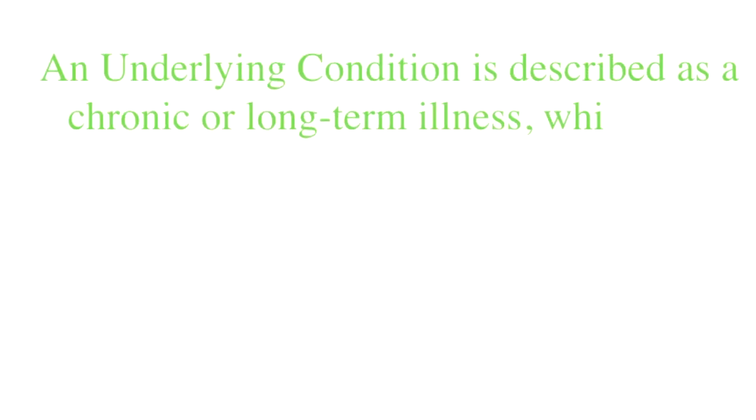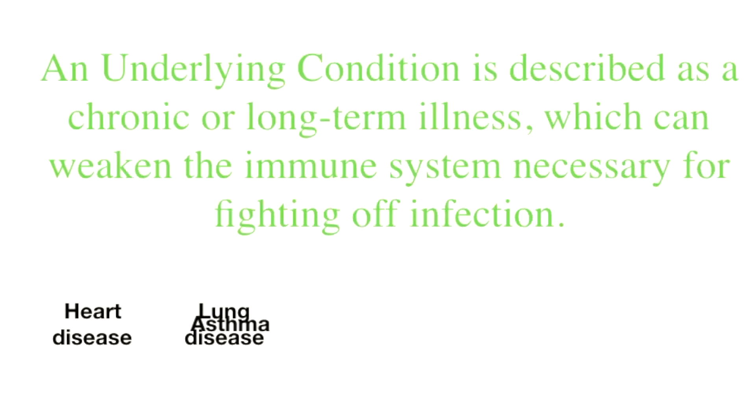Underlying conditions such as heart disease, diabetes, and lung disease can affect the immune system. This reduces the body's ability to fight off infections — and not just COVID-19, any type of infection, whether it's bacteria, fungi, or any other virus. An underlying condition is a medical problem that is long-term, chronic, and requires long-term treatment.